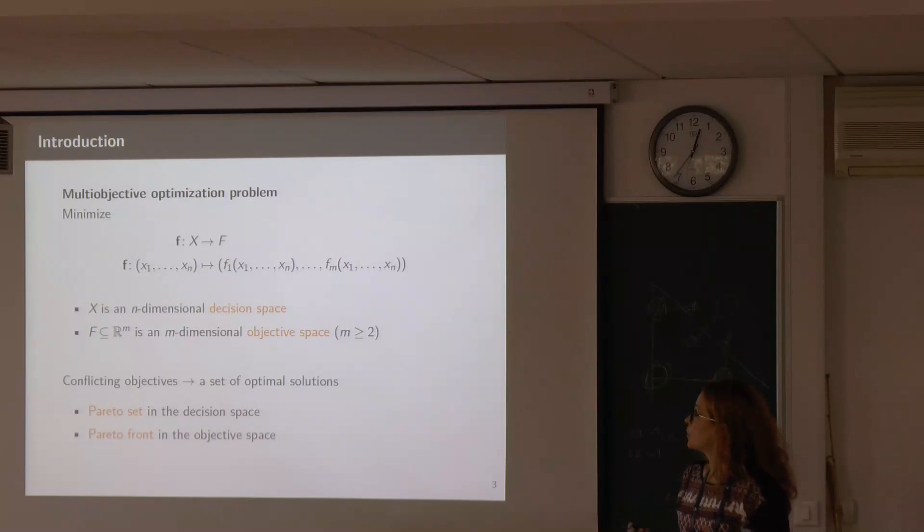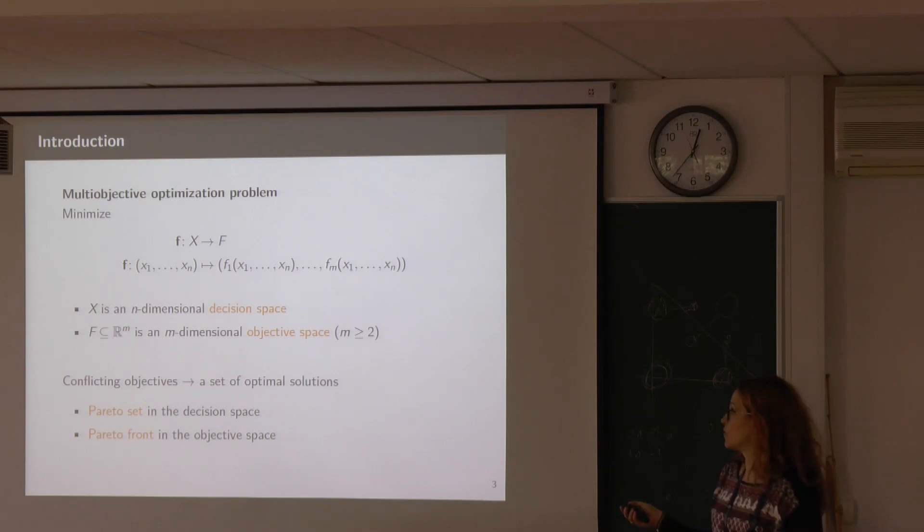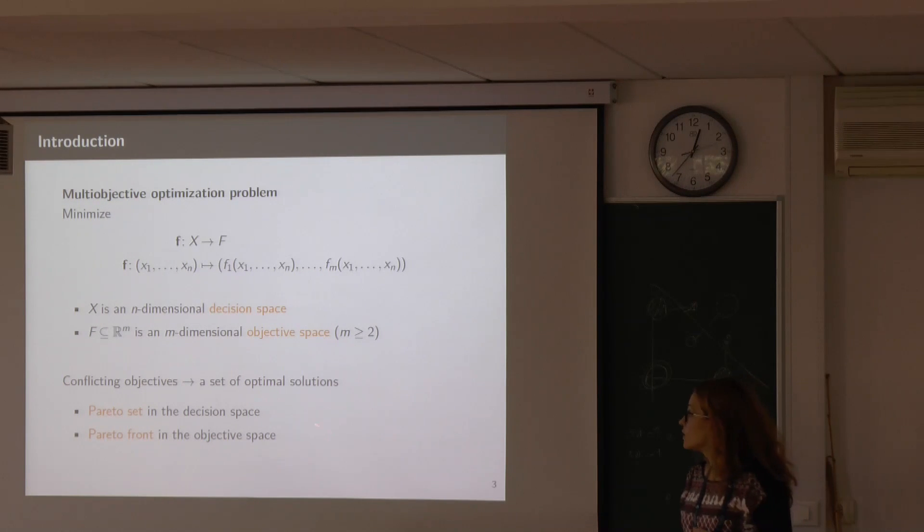In multi-objective optimization, we need to optimize more than a single function. We will be minimizing all functions in the rest of the presentation. You have two spaces that you're concerned with: one is the n-dimensional decision space, and then you have the m-dimensional objective space. Most probably, you won't get a single optimal solution that will be better with regard to all of the objectives, but you get a set of optimal solutions. We call this set the Pareto set when we are talking about the decision space, and it's called Pareto front in the objective space.